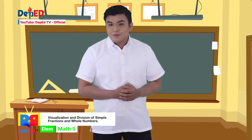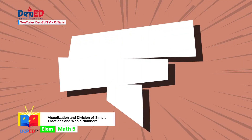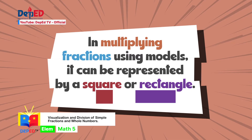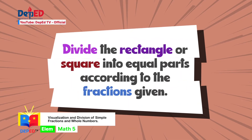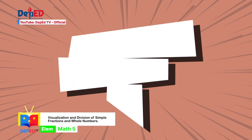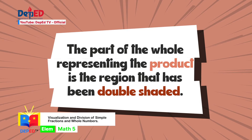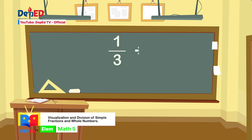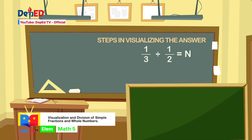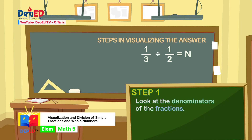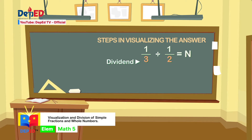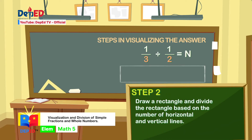Another way of solving this problem is to use your creativity in visualizing numbers. In multiplying fractions using models, it can be represented by a square or a rectangle. Divide the rectangle into equal parts according to the fractions given. The part of the whole representing the product is the region that has been double-shaded. To visualize 1 third divided by one-half equals n: Step 1 - Look at the denominators of the fractions, which are 3 and 2. The denominator of the dividend (3) gives the number of vertical columns. The denominator of the divisor (2) gives the number of horizontal rows. Step 2 - Draw a rectangle and divide it based on those horizontal and vertical lines.